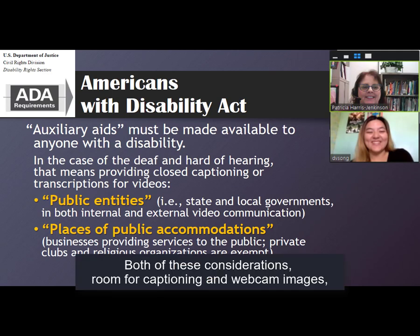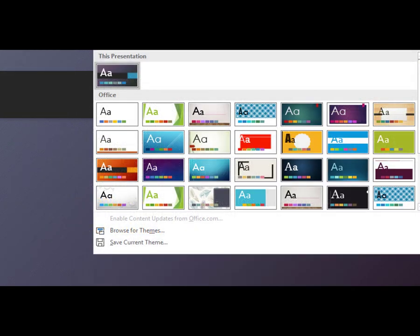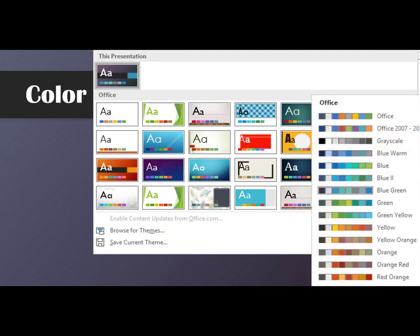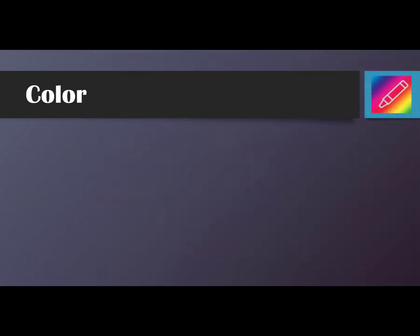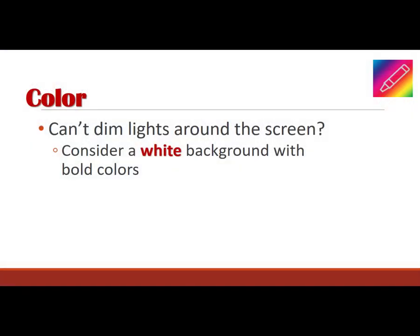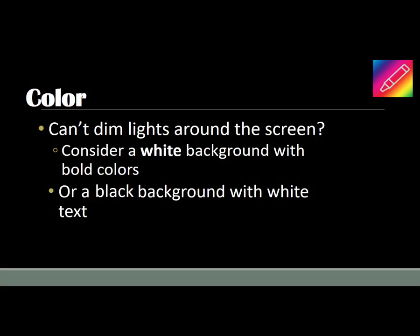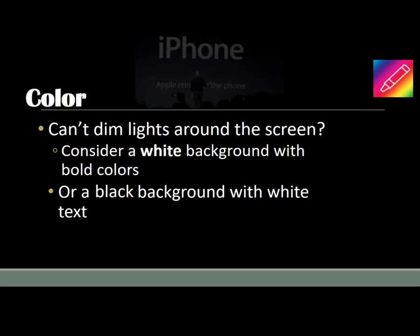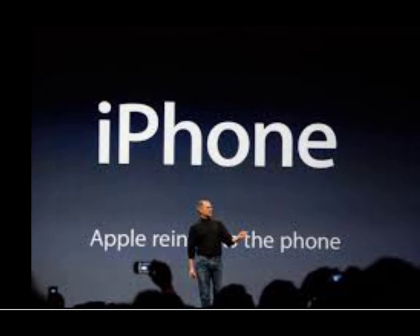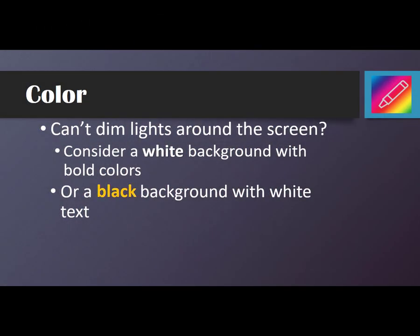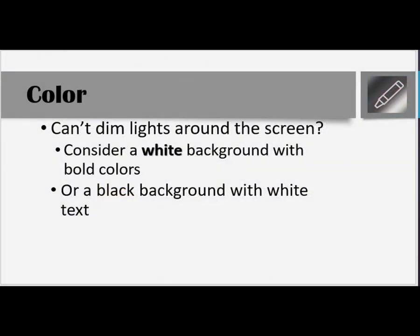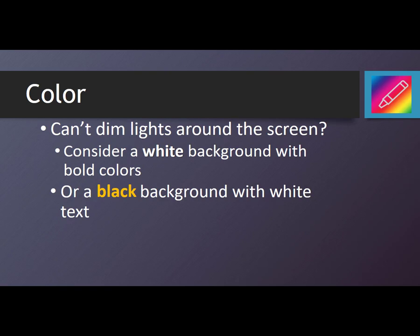Both of these considerations — room for captioning and webcam images — should factor into your choice of design templates. There are a number of templates to choose from, and for most, a huge variety of color schemes. Consider background color first. If you are presenting in a face-to-face environment but can't dim the lights around the projection screen, use a template with a white background and bold colors for the content. A white background also requires less ink or toner for printed handouts. Alternatively, a black background with white font color and light images may work well — Apple founder Steve Jobs tended to use this style, which allowed the audience to focus on him as the speaker. Avoid using color or bolding text as the only means of drawing attention to important information, as those who are colorblind or have low vision may not be able to see it. You can test your color contrast by viewing the slide in grayscale or printing on a black and white printer.